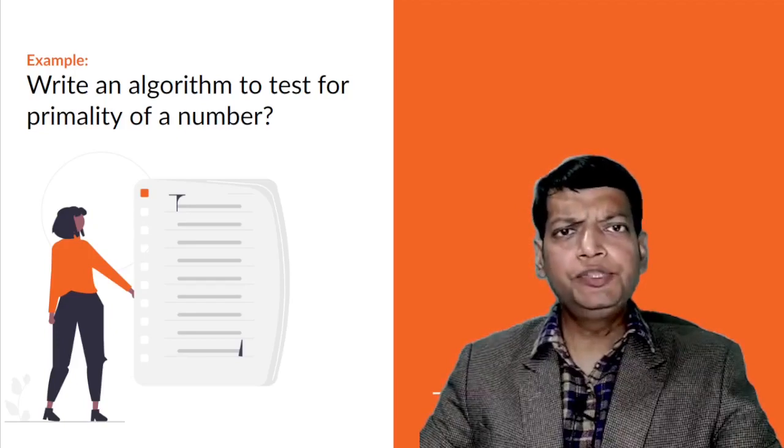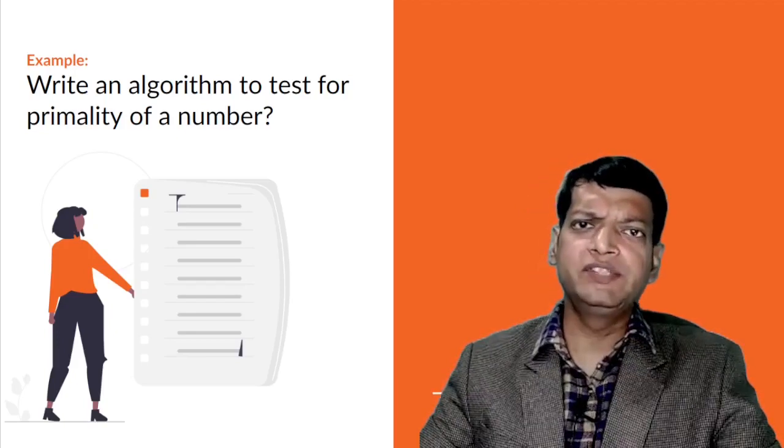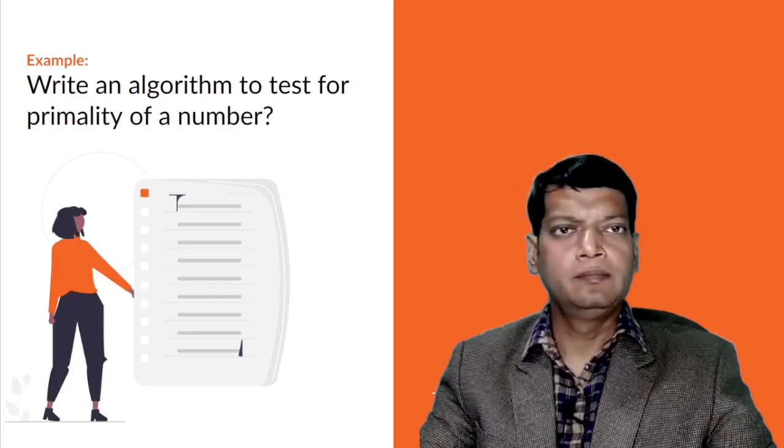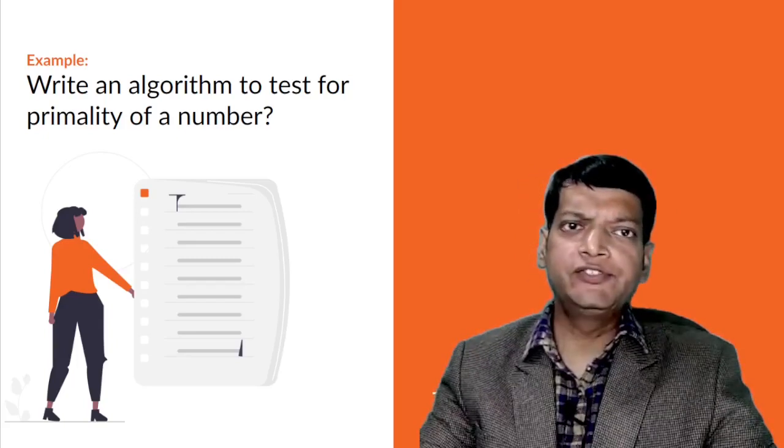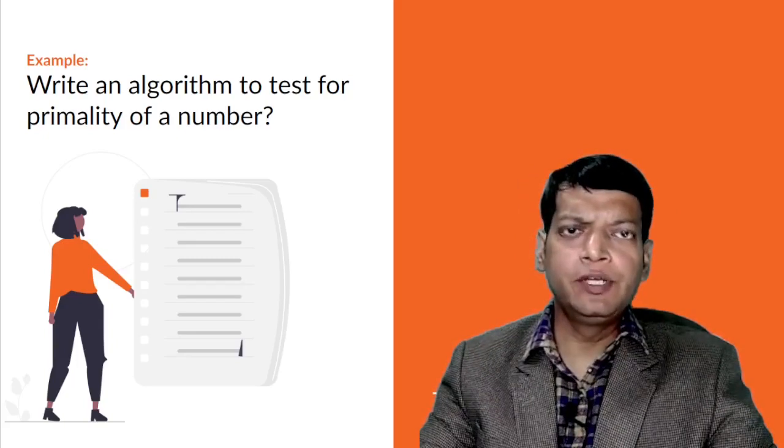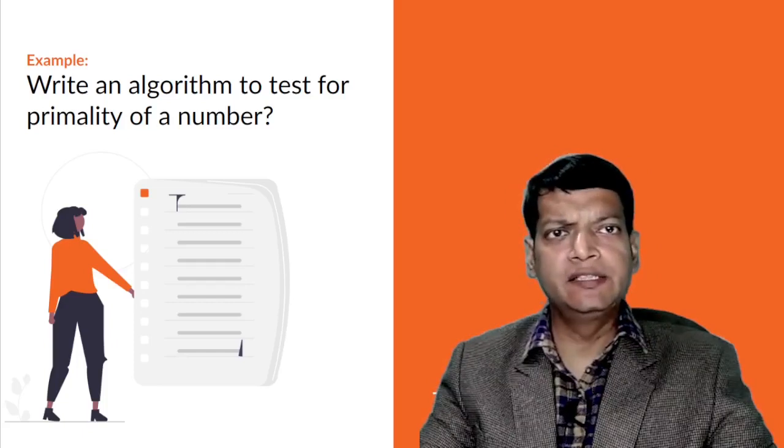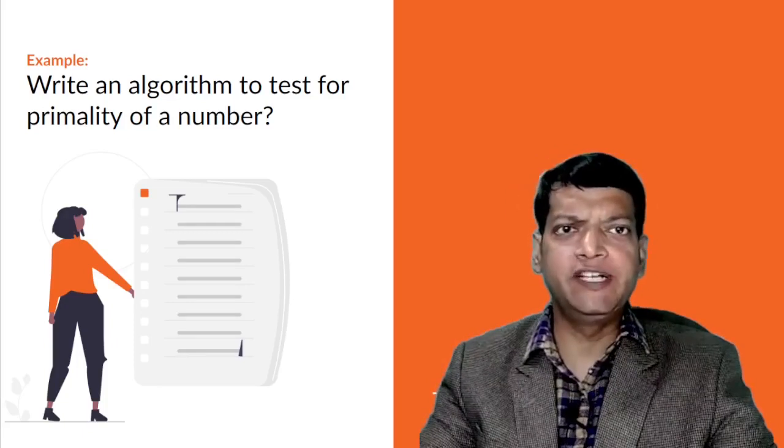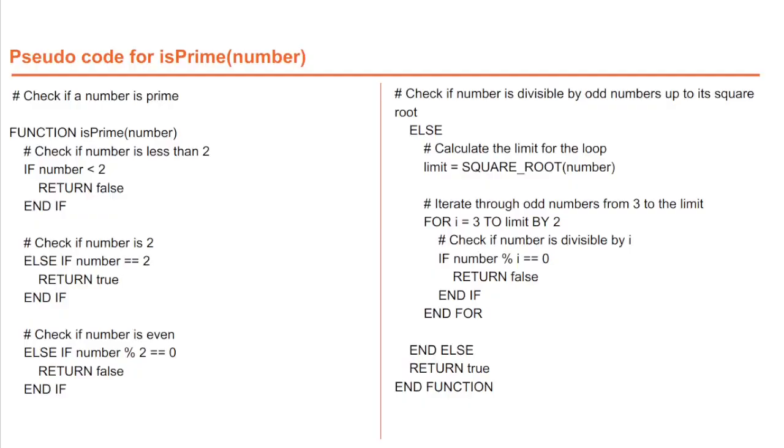We will write an algorithm to check whether or not a number is a prime number. First, we'll have a look at the pseudocode version of the algorithm, and then we'll have a look at the stepwise form. The algorithm which is visible on your screen. Take some time to read the algorithm completely. I suggest that you pause the video, read the whole thing slowly, and then resume.